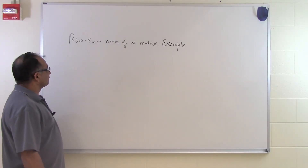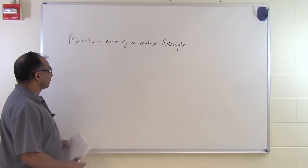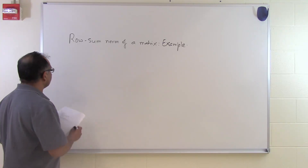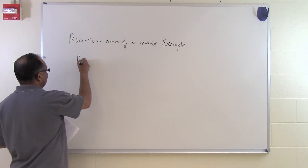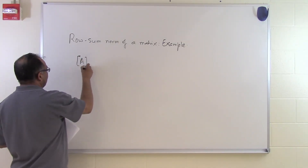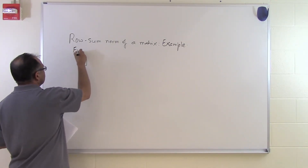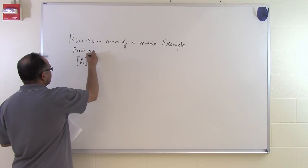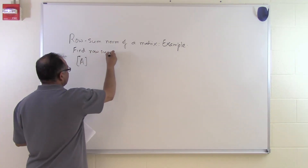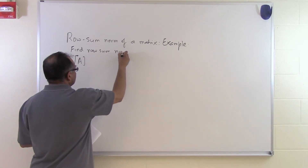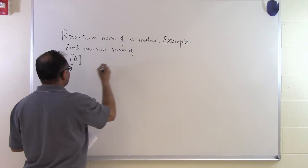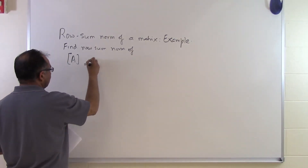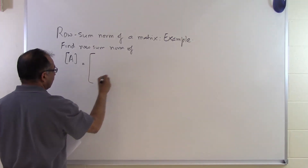In this segment we will take an example of a row sum norm of a matrix. How do we calculate it? Let's suppose somebody says, find the row sum norm of this matrix. A matrix is given as follows.